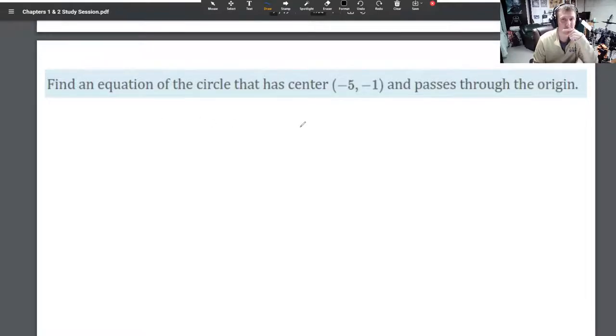The general form of a circle with center (h, k) is: (x - h)² + (y - k)² = r². This problem is rather quick because we are given h and k right away. So the formula is x minus negative 5, so it's x plus 5 squared, plus y minus negative 1, so y plus 1 squared.